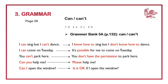Example 2: 'I can come on Tuesday but I can't come on Wednesday.' Here, 'I can come' means it's possible for me, and 'I can't come' means it's not possible — so we're talking about possibility. Example 3: 'You can park here. You can't park there.' 'You can park here' means it's okay to park here — it's permitted. 'You can't park here' means it's not okay or not permitted. So in example 3, we're talking about permission.